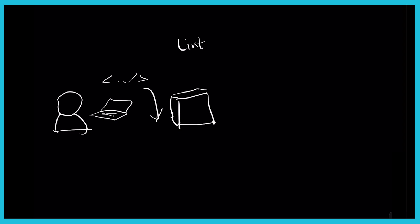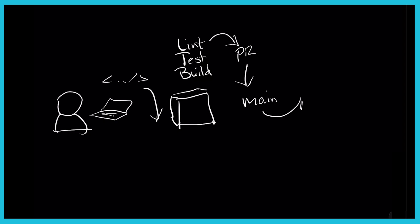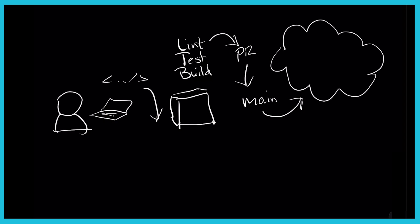We might run a linter on it to make sure the code conforms to agreed-upon standards. We'll run our test suite, then any build steps needed to make the software run. The engineer will open a pull request that goes through the review process, and once it's approved, that code gets merged into the main branch. From there, we can deploy that code out to our cloud provider or data center.